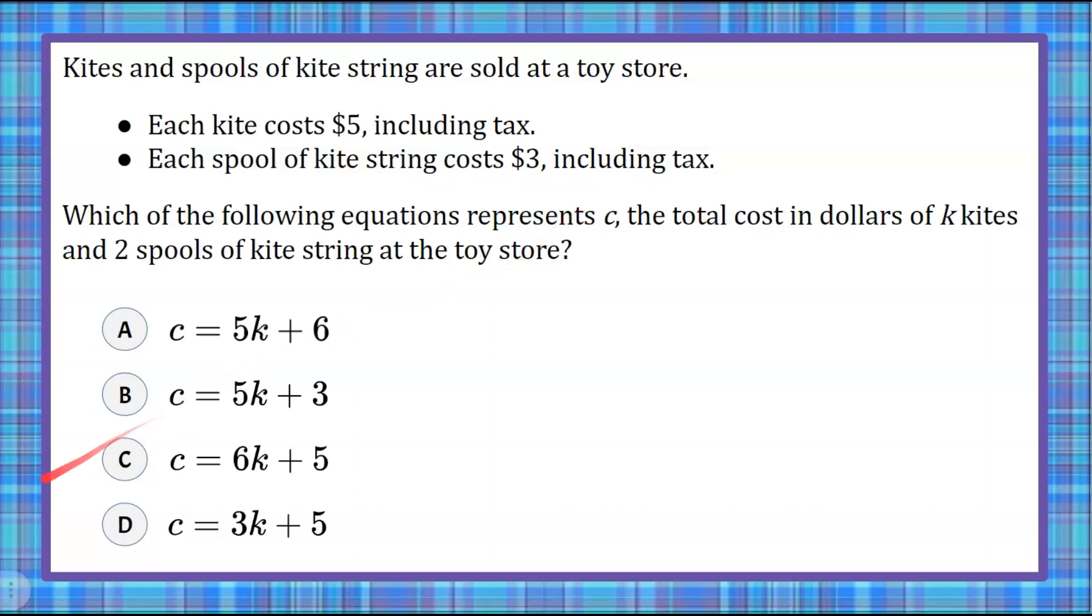and each spool of kite string costs $3, including tax. We are asked which of the following equations represents c, the total cost in dollars, of k kites and two spools of kite string at the toy store.